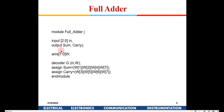To make a full adder using a decoder, the input is a 3-bit data representing A, B, C — all taken together as 'in'. The output is sum and carry. Since I am using a decoder, I will use a wire W[7:0]. I'll first instantiate the decoder with 'in' as the input and W as the wire output.